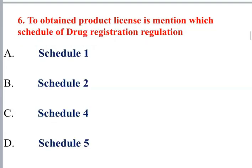Question number six: To obtain a product license, which schedule of the Drug Registration Regulation applies? Schedule 4 covers registration book format, and Schedule 1 covers the application for a recommendation letter for pharmaceutical industry.